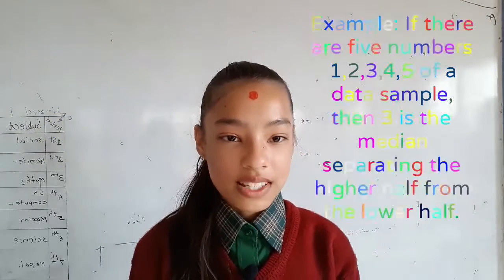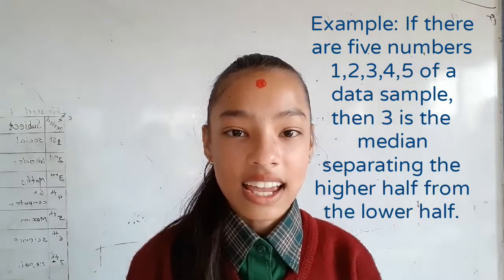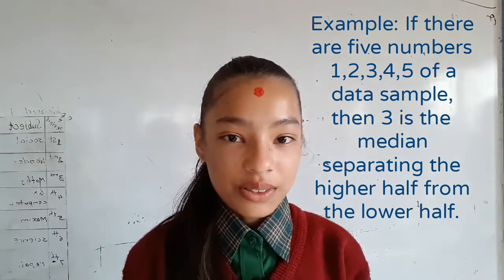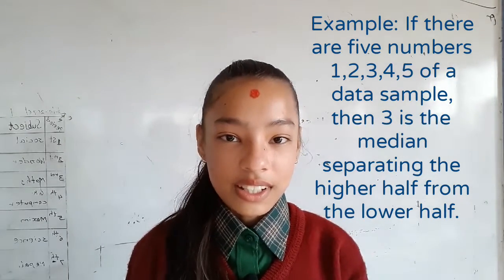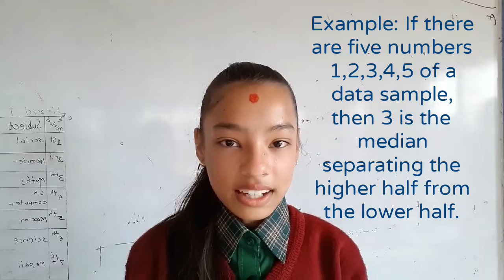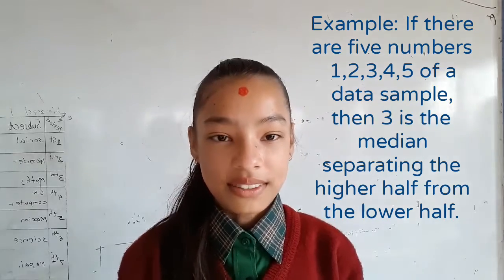If there are five numbers and three lies in the middle, so it is the median and it separates the higher half from the lower half.